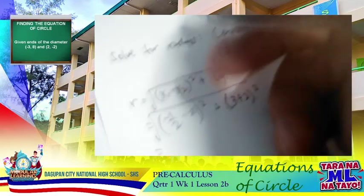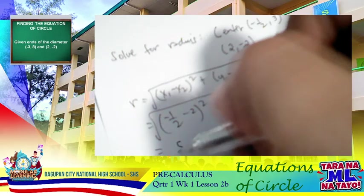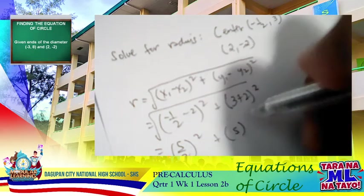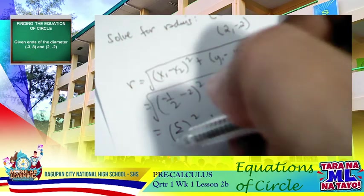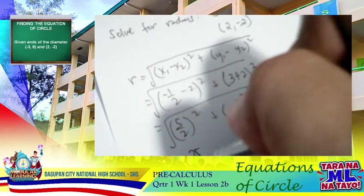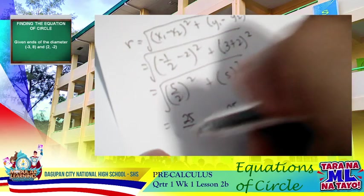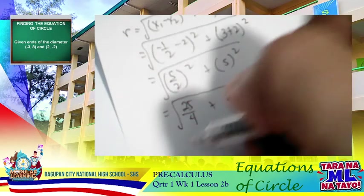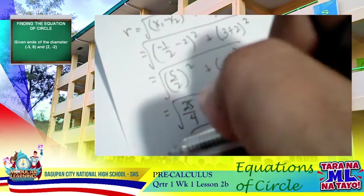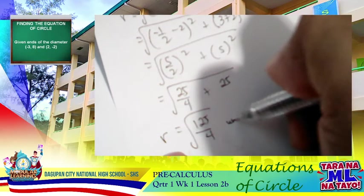Simplifying further: negative 1 half minus 2 is negative 5 halves. So we have 5 halves squared, plus 3 plus 2 squared, which is 5 squared. That gives us 25 over 4 plus 25, which equals 125 over 4. The length of the radius is the square root of 125 over 4 units.